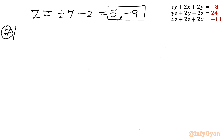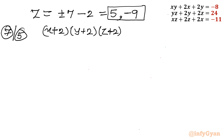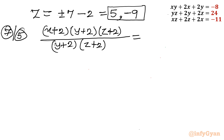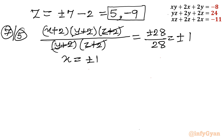Now consider equation 7 divided by equation 5: (x plus 2)(y plus 2)(z plus 2) divided by (y plus 2)(z plus 2) leaves (x plus 2). Right-hand side: plus or minus 28 over 28 equals plus or minus 1. So x equals plus or minus 1 minus 2, giving x equals negative 3 or x equals negative 1.